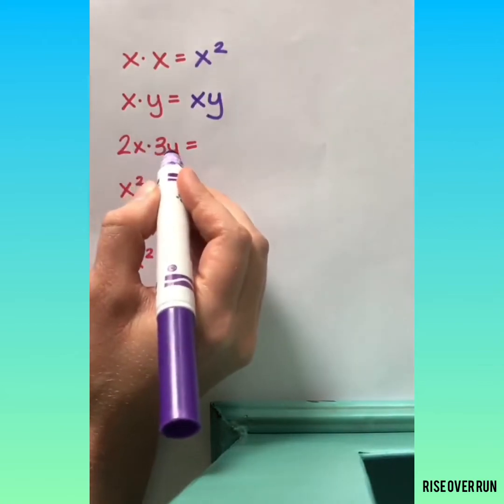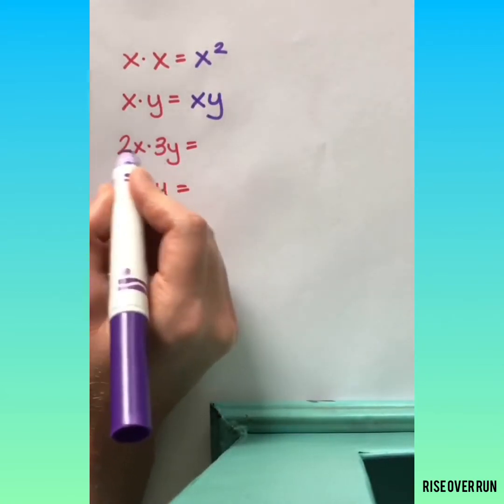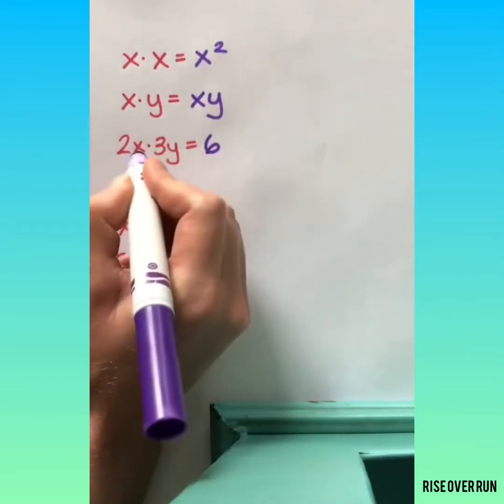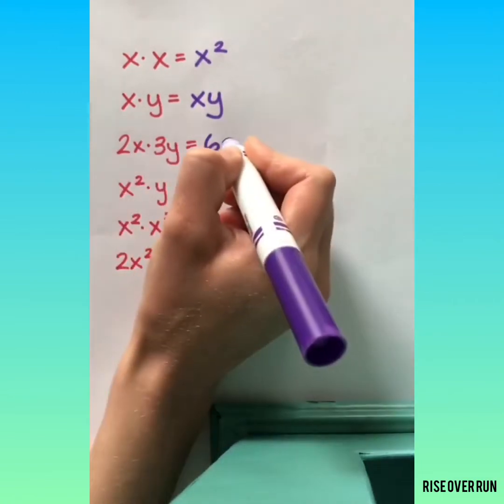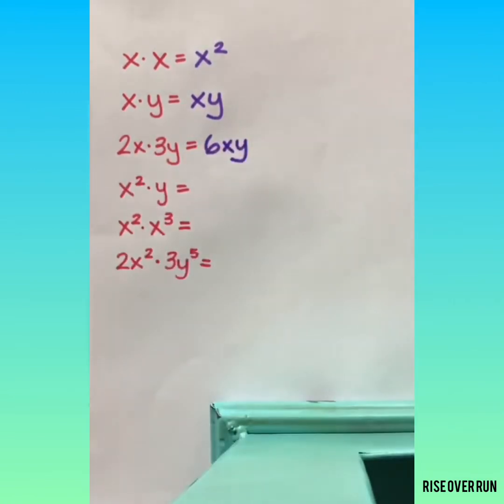2x times 3y, we can multiply these coefficients to get 6, but we have different variables, so we will just have 6xy.